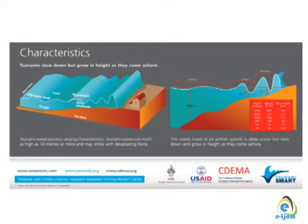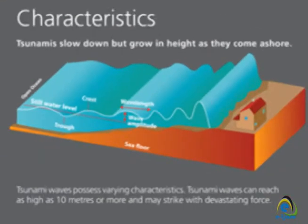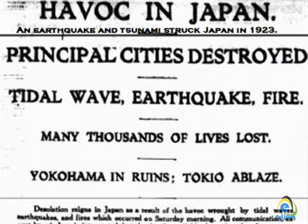This occurs because the wavelength is very large, so the wave moves large bodies of water. All the energy in that mass of water is released on the seashore and causes serious damage to property and loss of lives.